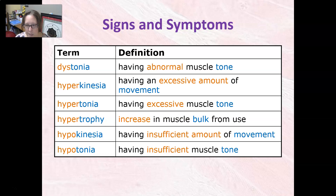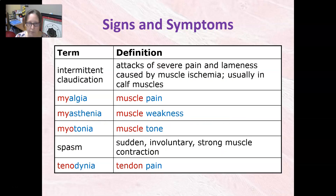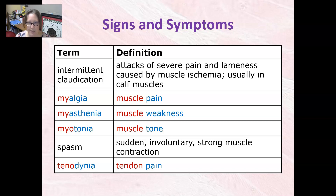Hypokinesia is having an insufficient amount of movement, and hypotonia is having insufficient muscle tone. Intermittent claudication is attacks of severe pain and lameness caused by muscle ischemia, usually in calf muscles. Muscle ischemia is lack of blood flow to the muscle, and if you're lame, you can't use that muscle or that leg due to severe pain.